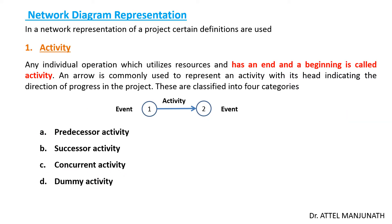The first definition is activity. Any individual operation which utilizes resources and has a starting point as well as an end point is called an activity. An activity is represented by a line with an arrow mark, and the arrowhead represents the progress of the project work.